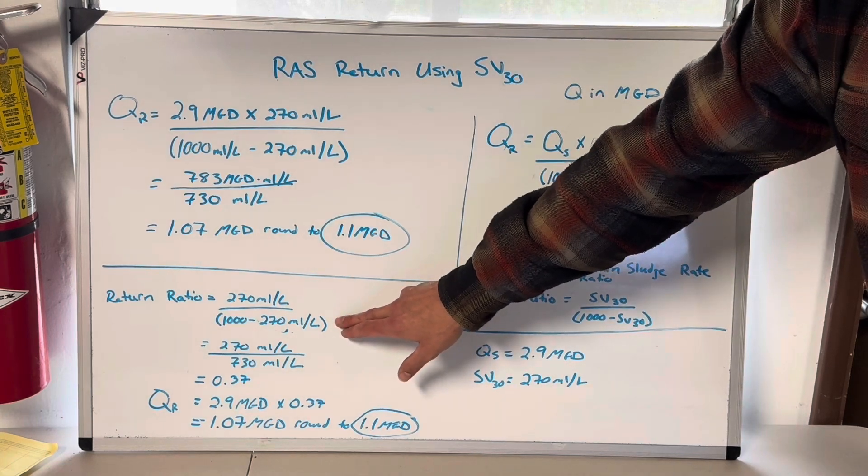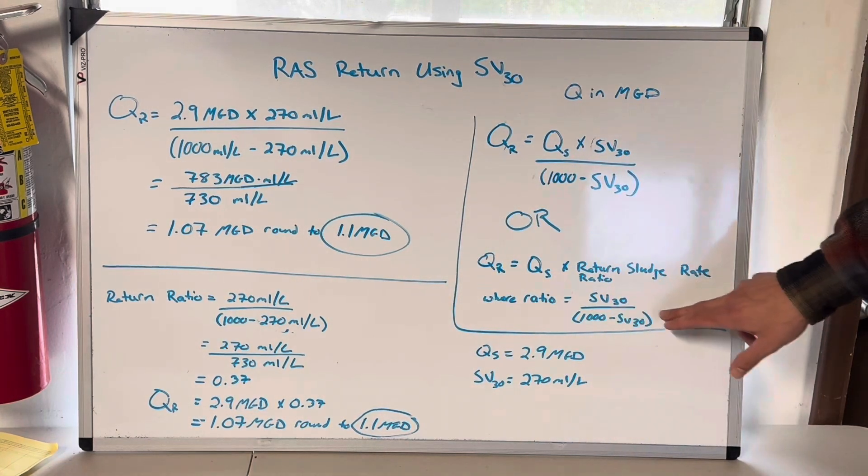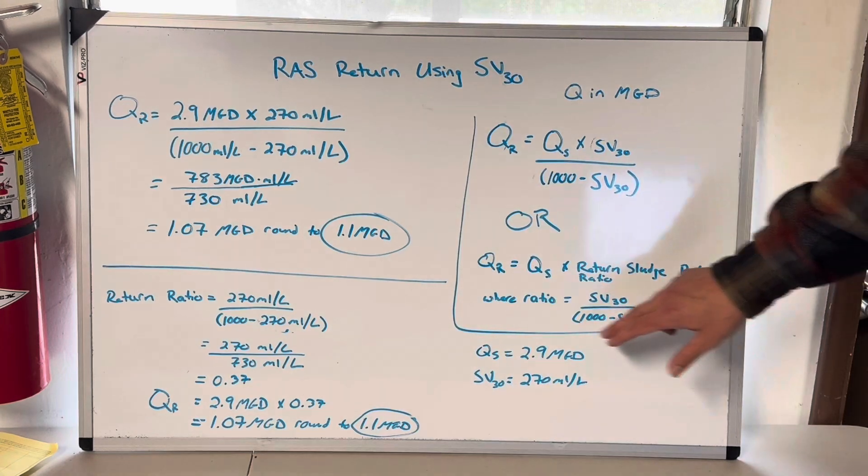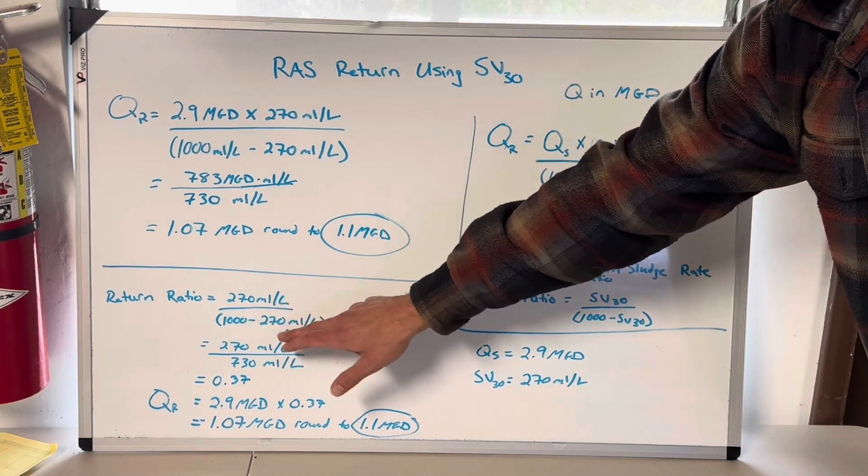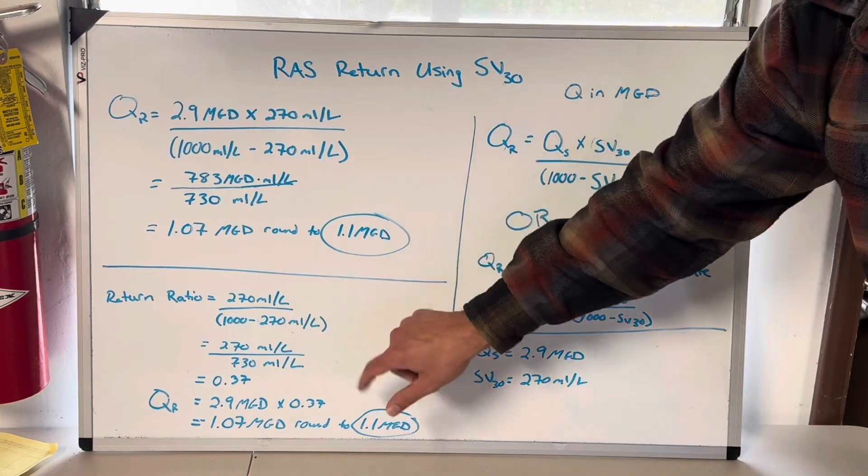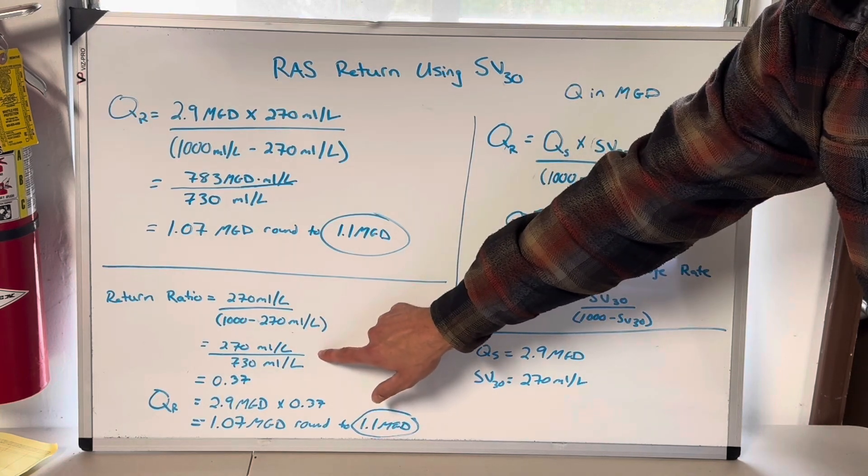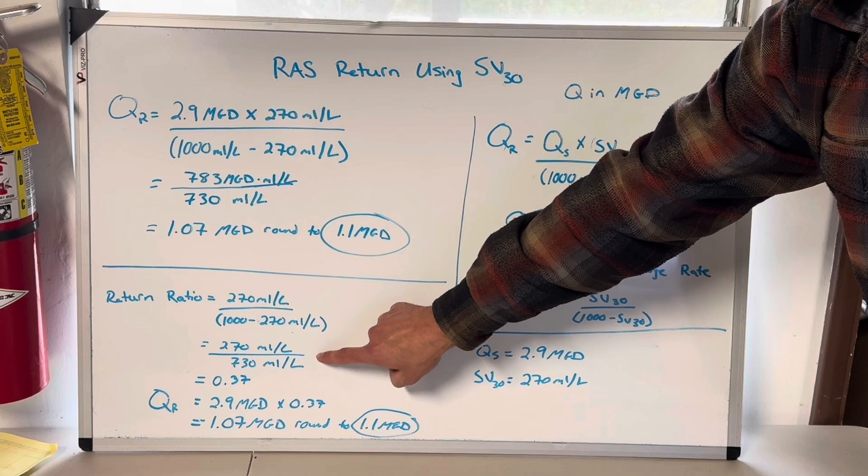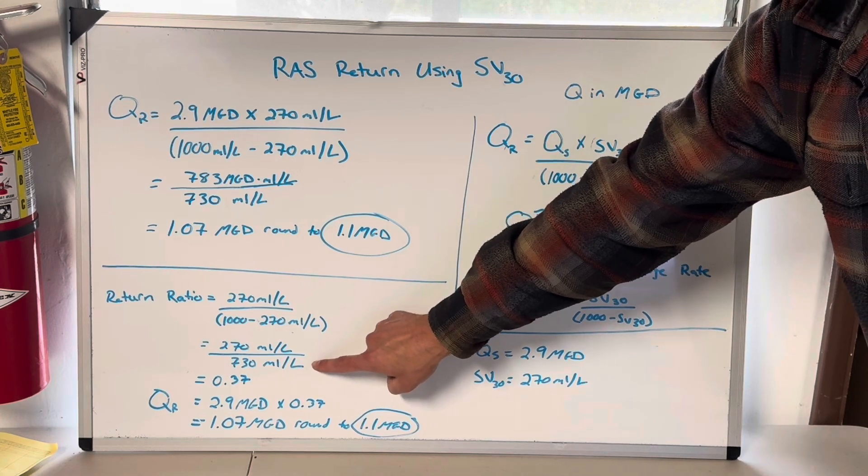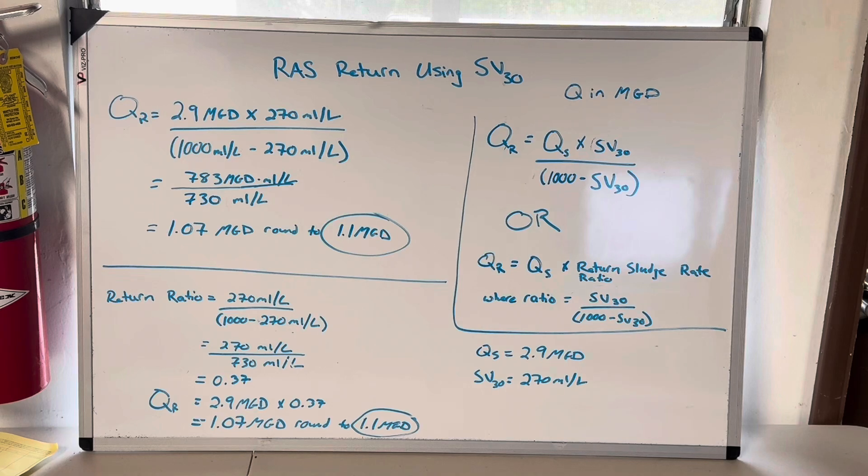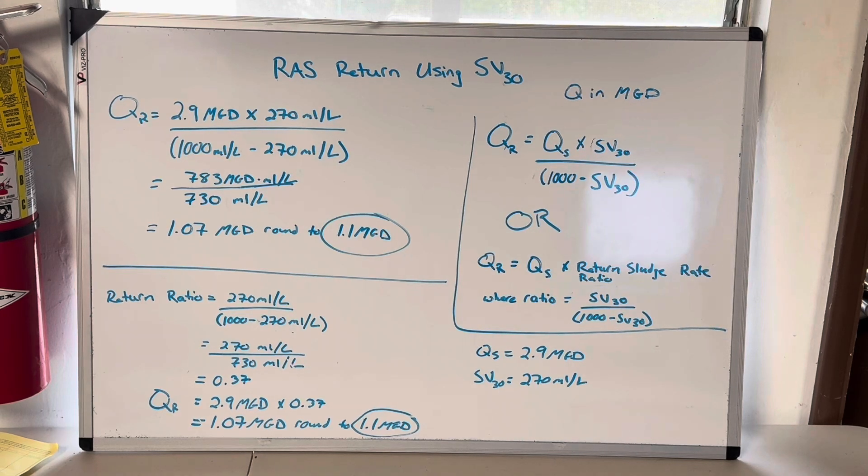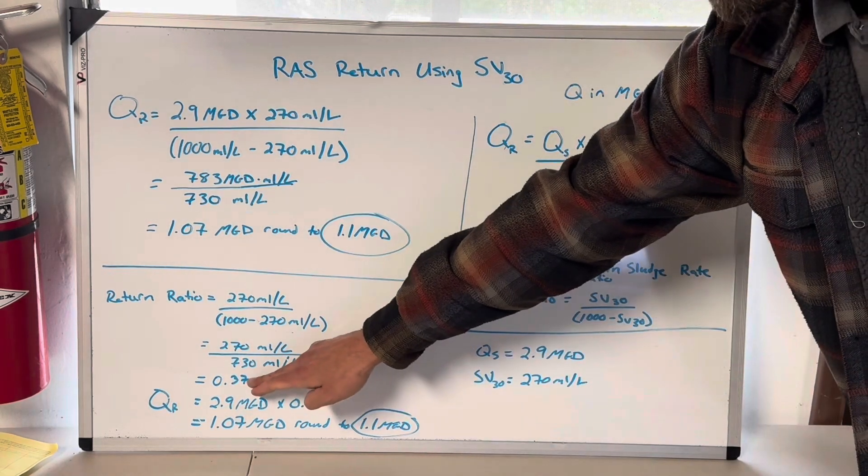Return ratio. We're going to do that first. This is the second way to solve this problem, which is 270 milliliters per liter divided by 1000 minus 270 milliliters per liter. And then that brings you down here, which is 270 divided by 730. And that right there, you can cancel those milliliters per liter out. It's so much easier to see it right there. And that gives you a ratio of 0.37.